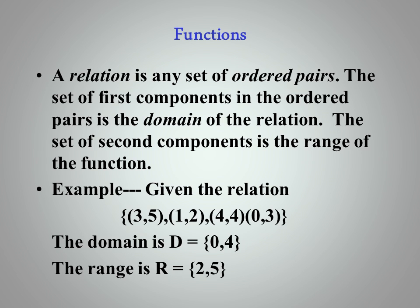So given the relation {(3,5), (1,2), (4,4), (0,3)}, the domain would be the minimum value of the first number to the maximum value of the first number. And the range would be the minimum value of the second number, in this case 2, and then followed by the maximum value of the second number.